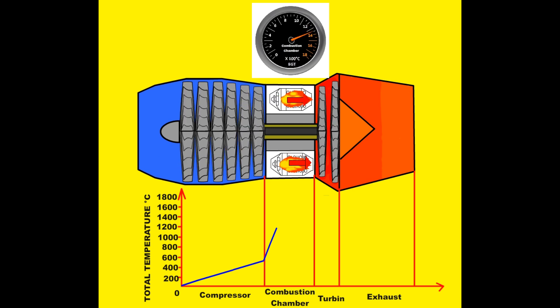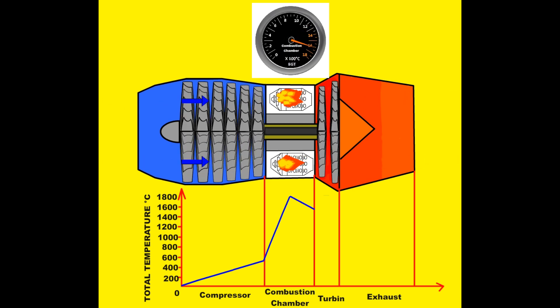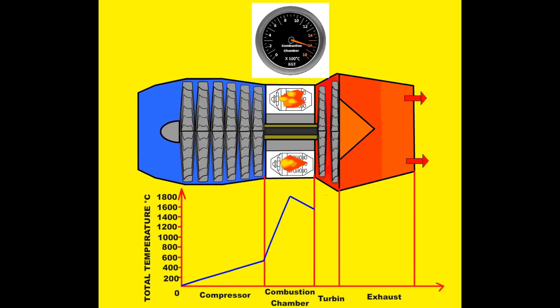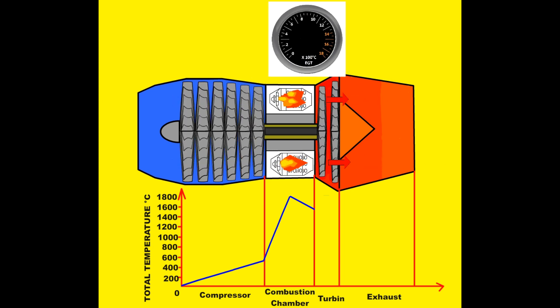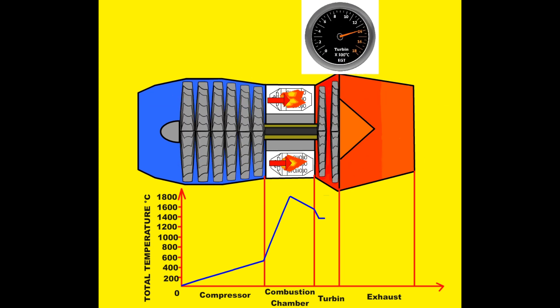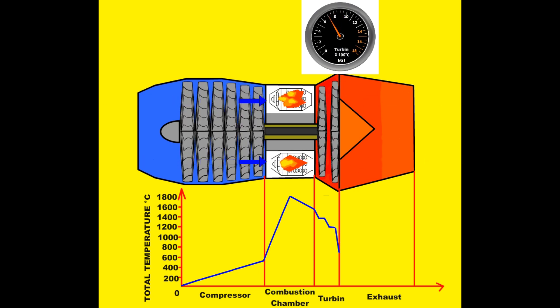The highest temperature values in the engine are reached in the combustion chamber as a result of burning. However, the temperature decreases a little with the effect of the cooling air taken from the compressor in the secondary area of the combustion chamber. Because of the loss of energy in each turbine stage and the cooling of the turbine elements, the temperature of the burnt gases entering the turbine gradually decreases.